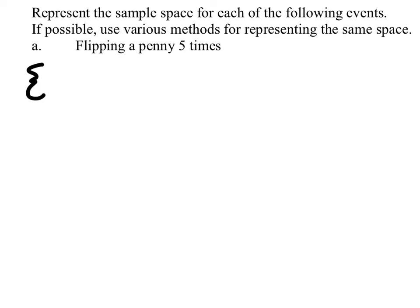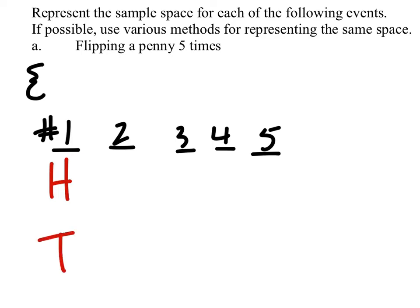Alright, here's why there are 32 outcomes. So we've got flip number one, then two, then three, then four, and five. We probably won't get that far. For the first flip, you can either get heads or tails. For the second flip from heads, you get heads or tails. From each of these, you get two more.